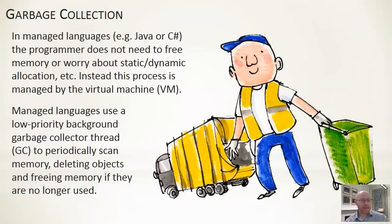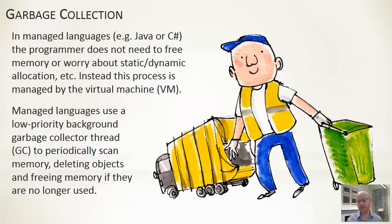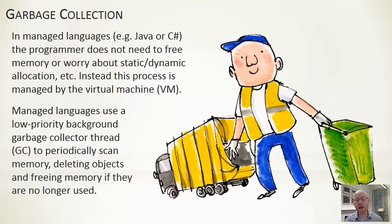Garbage collection is a facility that's built in to managed languages. It's one of the defining characteristics of what makes a managed language, that there is garbage collection within it. The advantage of garbage collection is that if we allocate an object — create a new array or a new instance of a class — we don't need to worry about how it gets created and allocated within memory, or how it gets released or removed from memory. All of the memory management aspects are managed on our behalf.